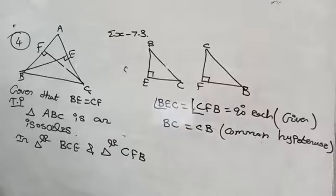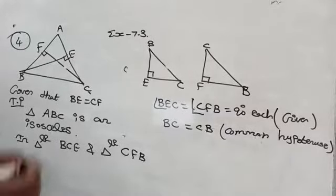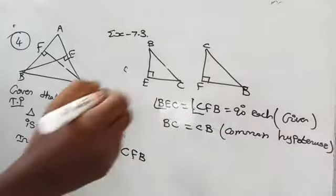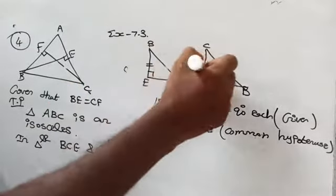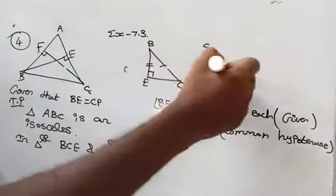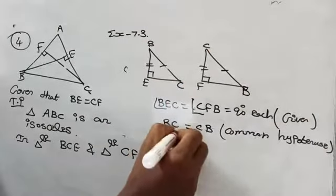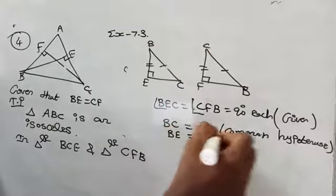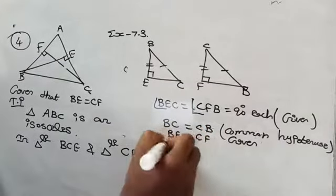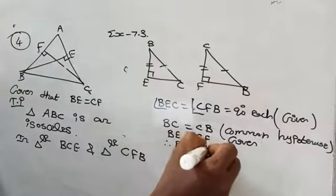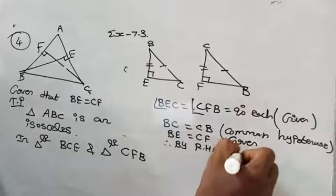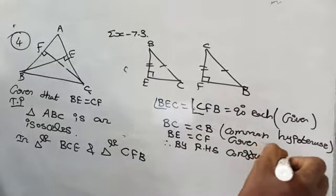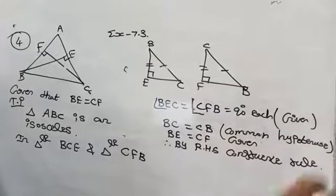We have found two parts. We need one more part to prove these two triangles are congruent. What is given? BE equal to CF — it is given. Therefore, by RHS congruence rule. RHS congruence rule means right angle, hypotenuse, and any one side of the triangle.